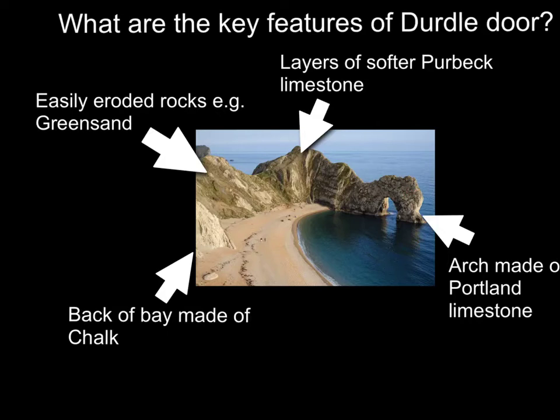The oldest and most important of these rock layers is by far the hardest, and this is the Portland Limestone. The Portland Limestone was used for the Houses of Parliament when it was built, and it was chosen because it was so hard. This explains why this rock, and none of the others, actually juts out into the bay.